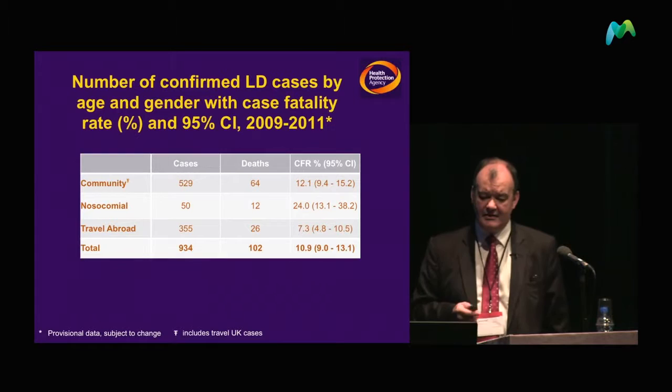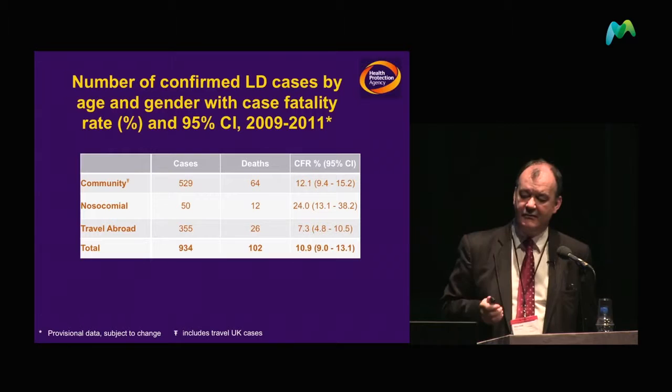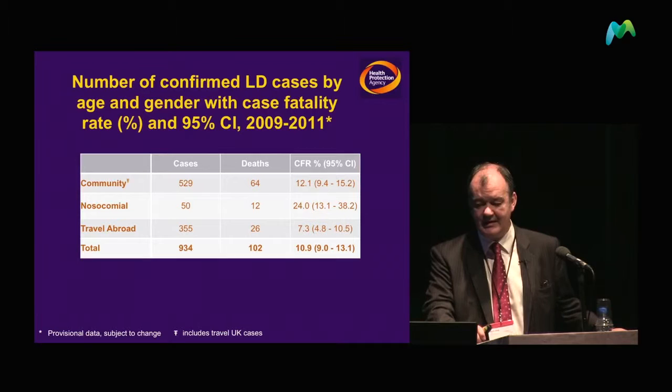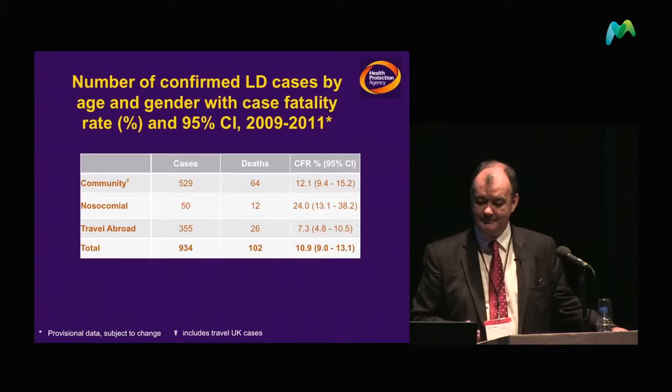This also illustrates the difference not just in age and gender, but in where you acquire your Legionella. You'll see that acquiring it in hospital has a much higher case fatality rate than acquiring it through travel abroad or in the community.